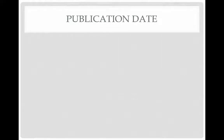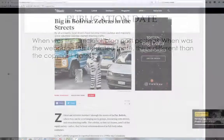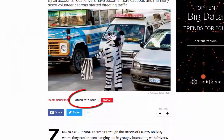Now we use the publication date — when was the article or blog posted, or when was the web page last updated? Note, this is different than the copyright date. If you can't find a date, leave it blank. The date for this article is March 2017. Notice that the months are abbreviated.